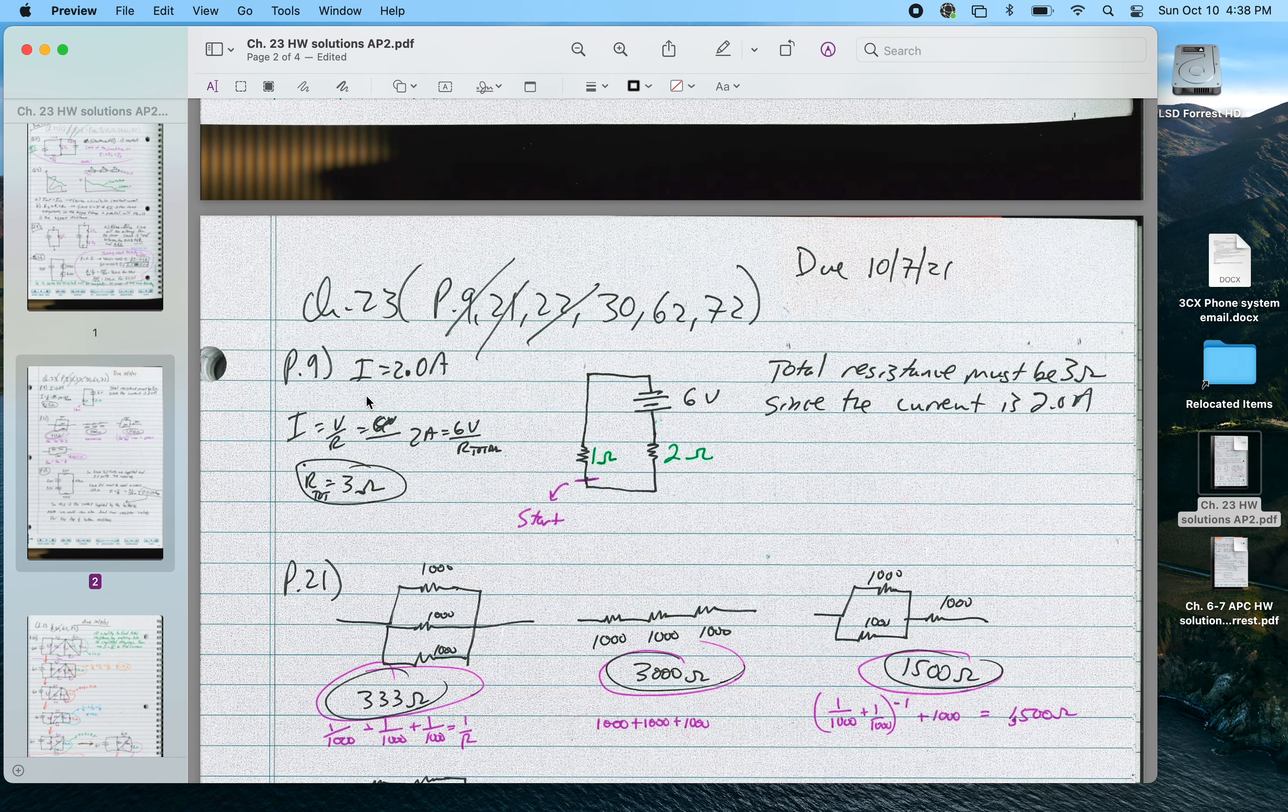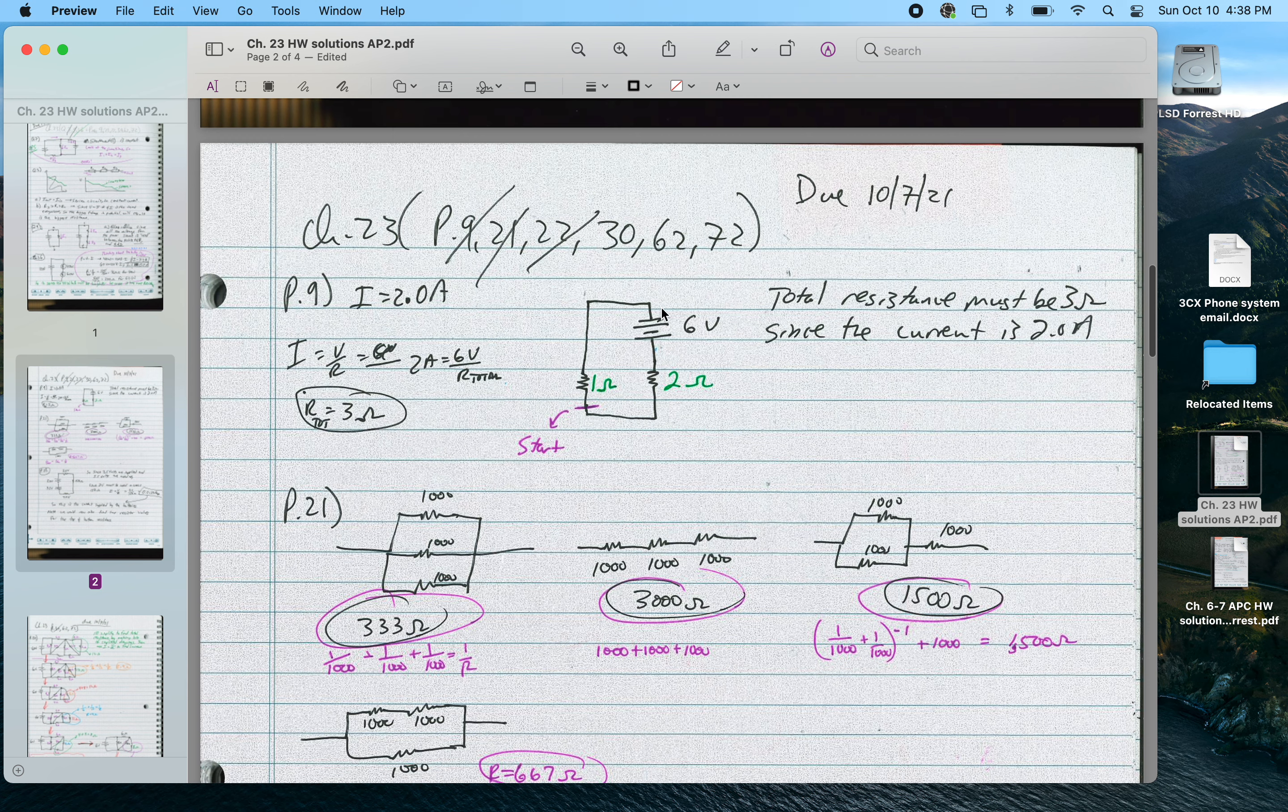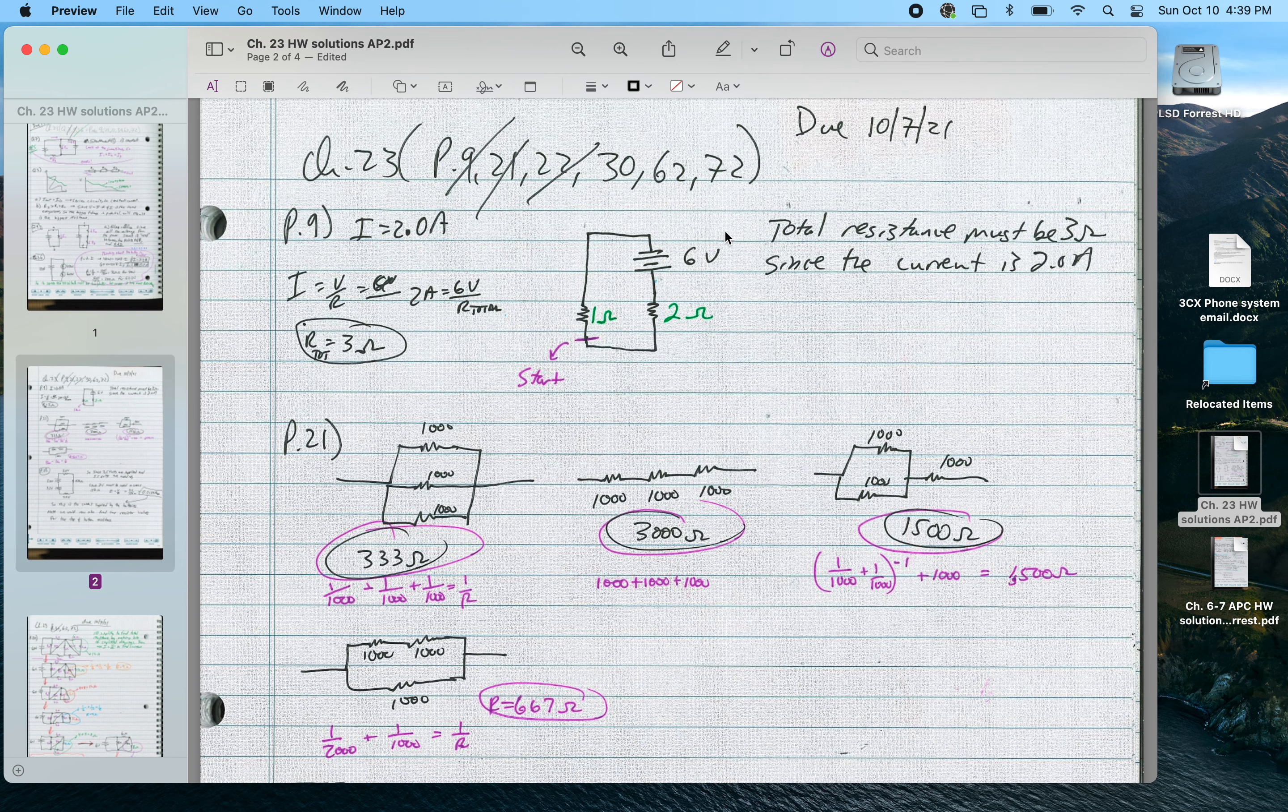For problem nine, I have a 2-amp current, it says. And it's asking you to draw a circuit, and it says basically to start here. Well, I should have probably drawn the graph, but it basically goes down and then back up and then down some again. So if the total current in the circuit was 2 amps and I had a 6-volt power source, I know I needed 3 ohms total resistance. Of that, the less steep drop of the graph was first. So that would be a 1-ohm drop, then add the 6 volts back in, then the 2-ohm drop. So basically I said you're starting in the lower left-hand corner and going clockwise.